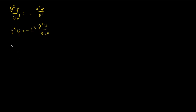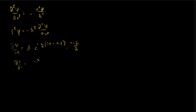Differentiating our equation with respect to t, we get that the partial derivative of psi with respect to t equals A times e to the negative i over ℏ times (Et minus xp), times (minus iE/ℏ). Using our previous equation, the partial derivative of psi with respect to t equals minus iE/ℏ times psi. Therefore, E·psi equals minus ℏ/i times the partial derivative of psi with respect to t.